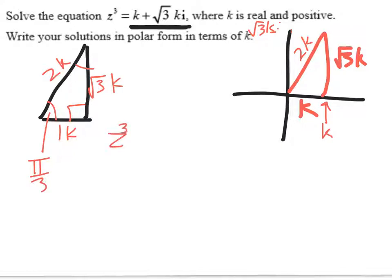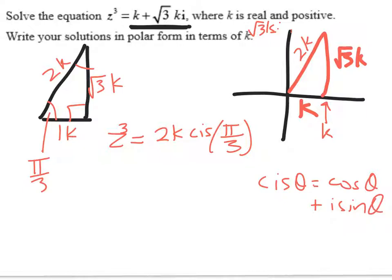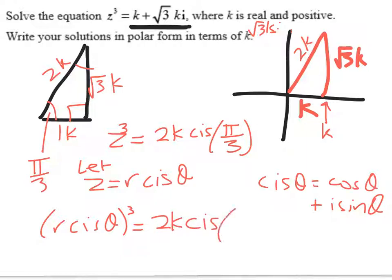So, what we're solving is z³ is equal to 2k cis(π/3). Remember, cis of theta is shorthand for cos of theta plus i sine theta. So we can write z as r cis theta, and we're trying to figure out what is r and what is theta.